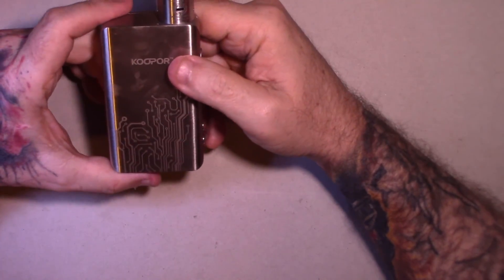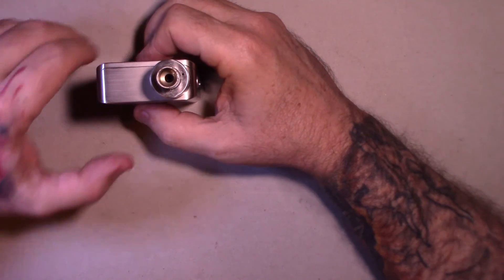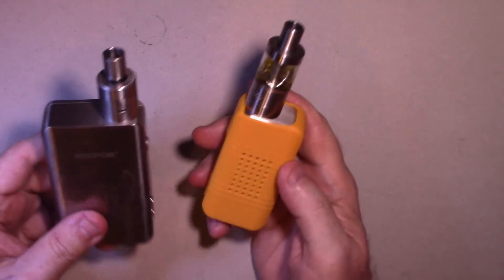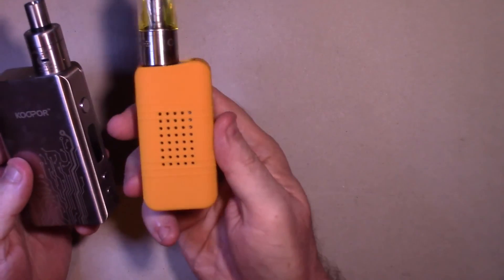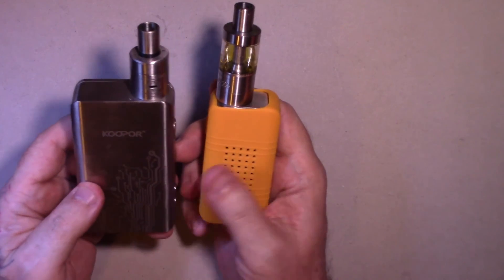We talked about the wattage and the voltage and these mods. Well, both of these mods - this is a Cooper Plus, this is a Cooper Mini. This one has one 18650 battery, this one has the two.